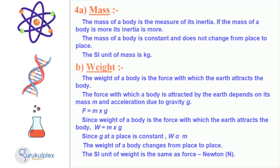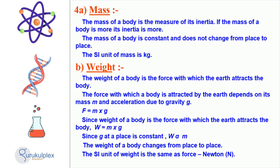A body's mass is indicative of its inertia. It stays the same regardless of location and is measured in kilograms. Weight, on the other hand, is the force with which the earth draws the body, which is found by multiplying the body's mass with the force of gravity, depending on the place. This force is then measured in newtons. Therefore, weight is not fixed and may be different in different places, while mass stays the same.